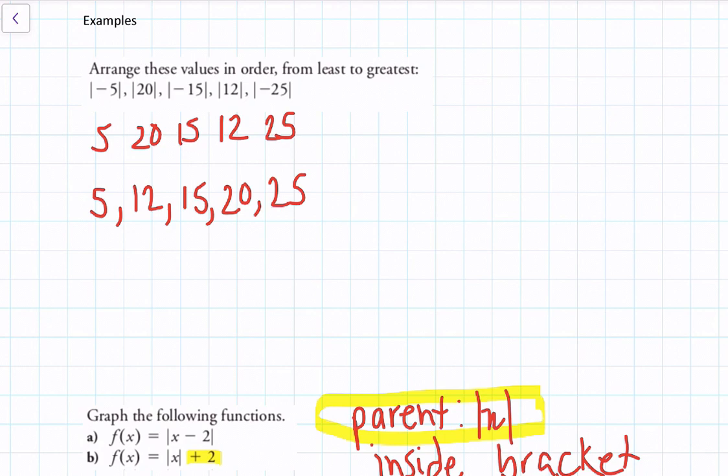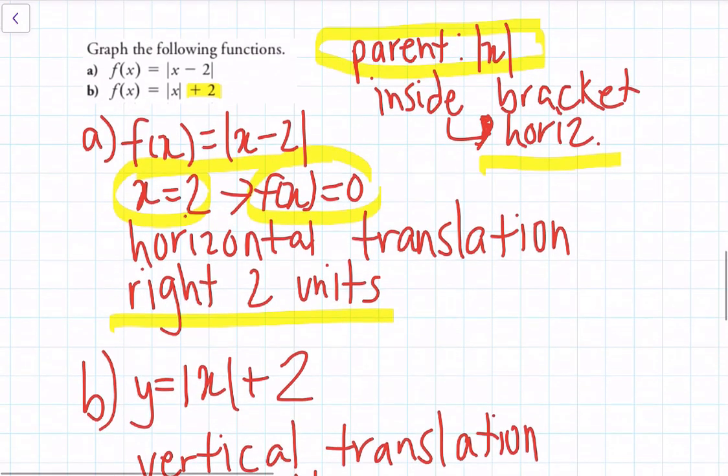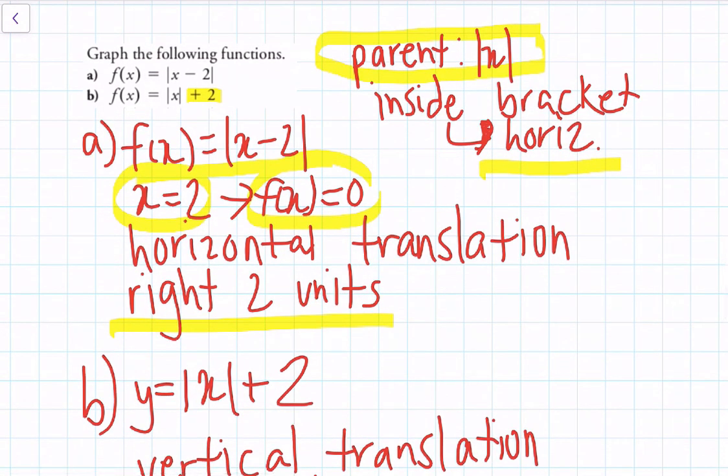The first step is to take the values out of the absolute value, and then arrange them from least to greatest, which I've done. The second example is about graphing the following functions.